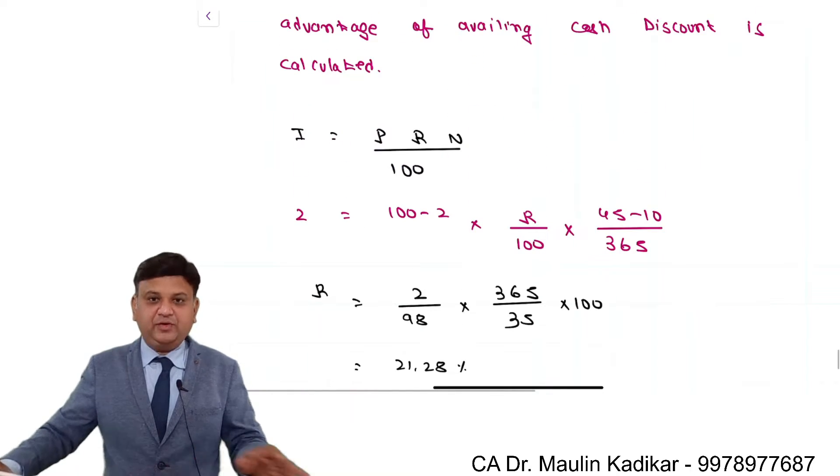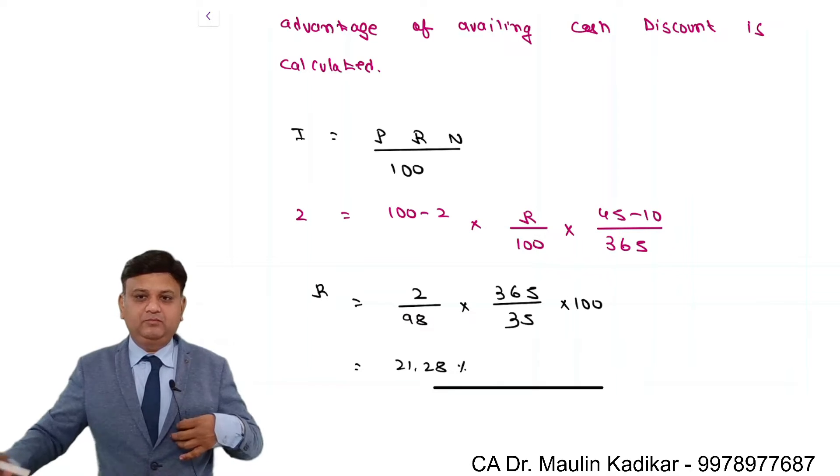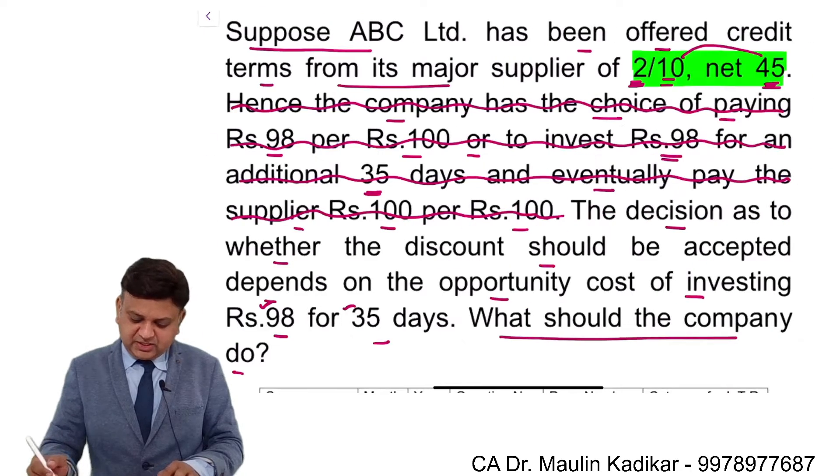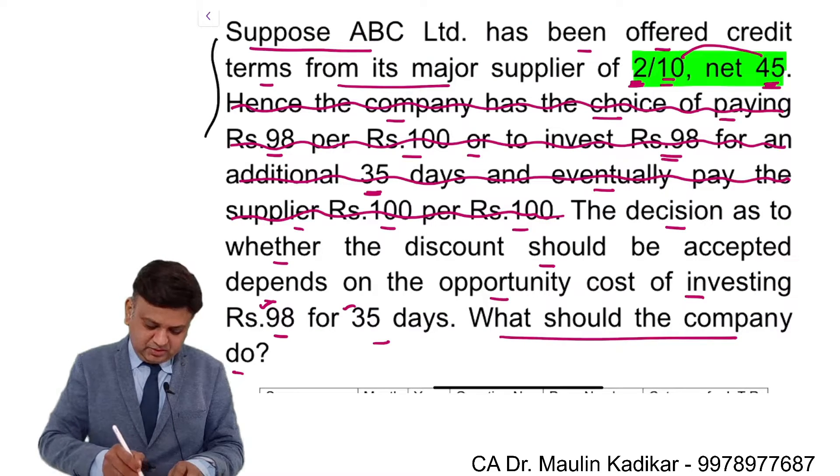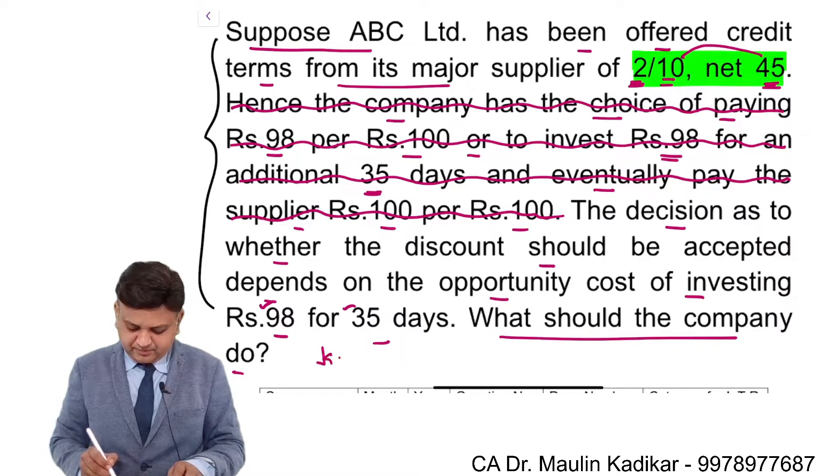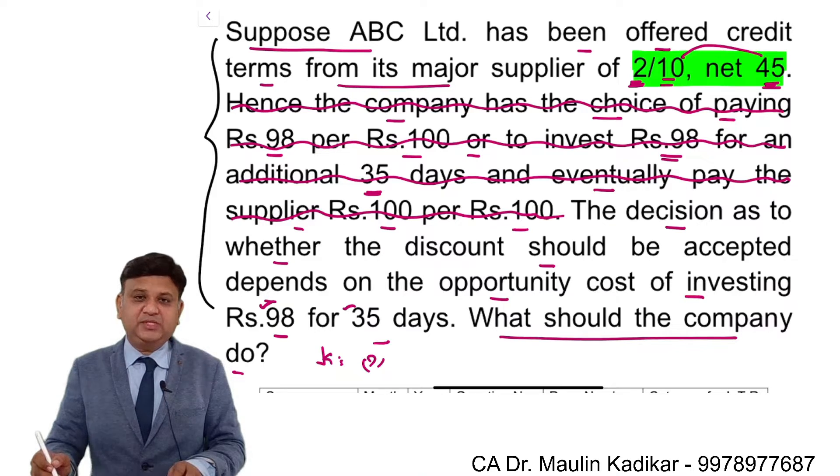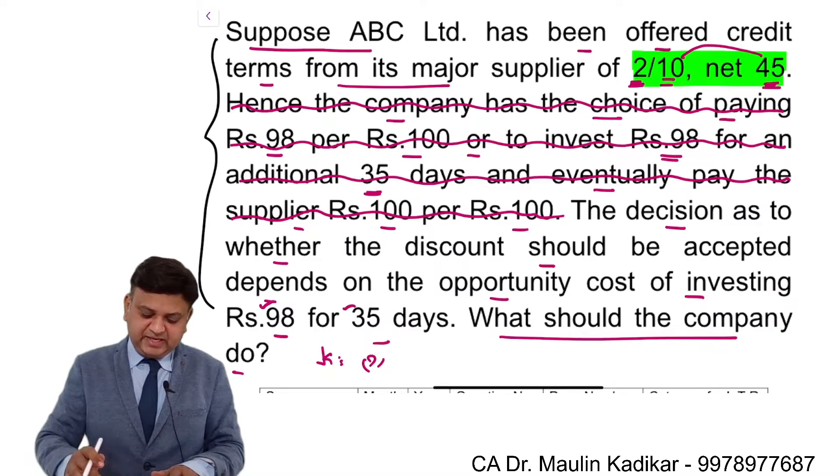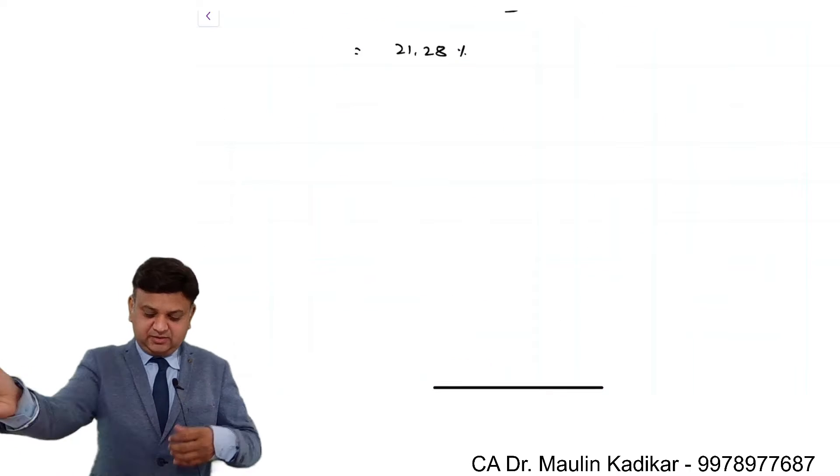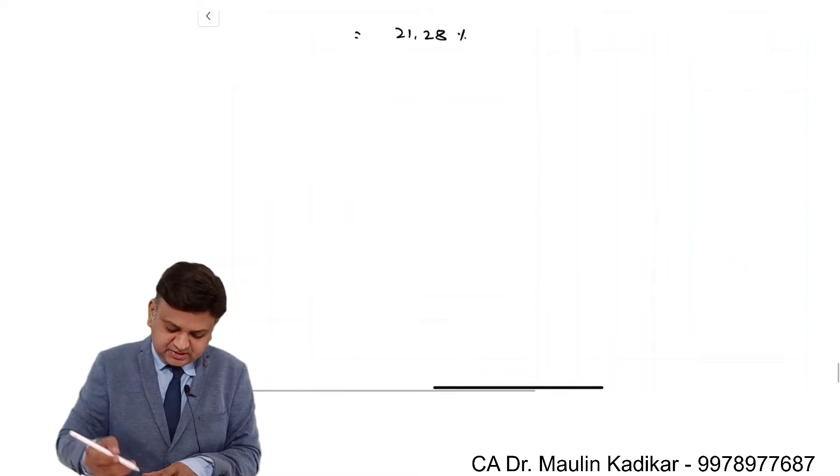This is the advantage of availing cash discount. Here friends, basically the question is not providing the information about the cost of capital of the company. This information is missing, so we can give an open-ended answer.